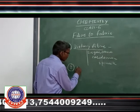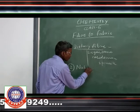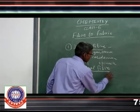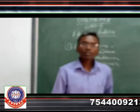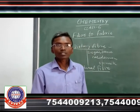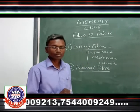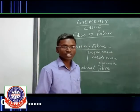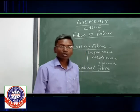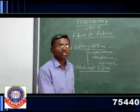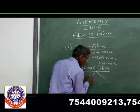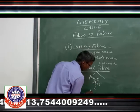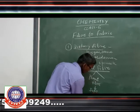Secondly, I am talking about natural fibers. Such fibers which are obtained from plants and animals are called natural fibers. Fibers obtained from plants, such as jute and cotton, are called plant fibers.